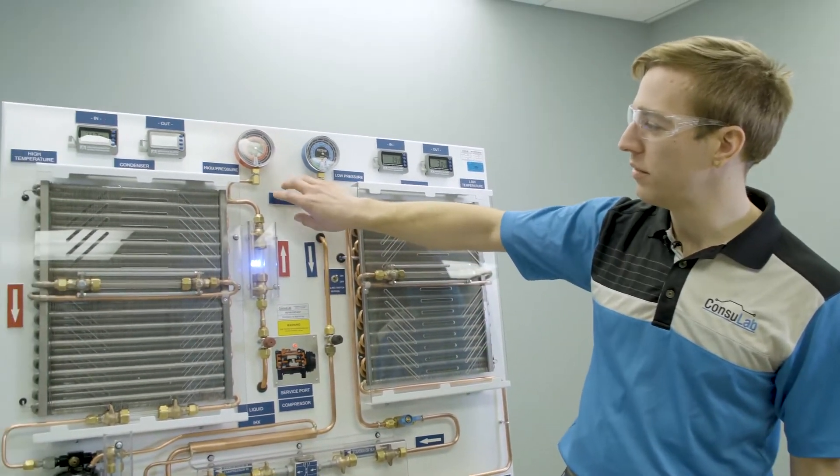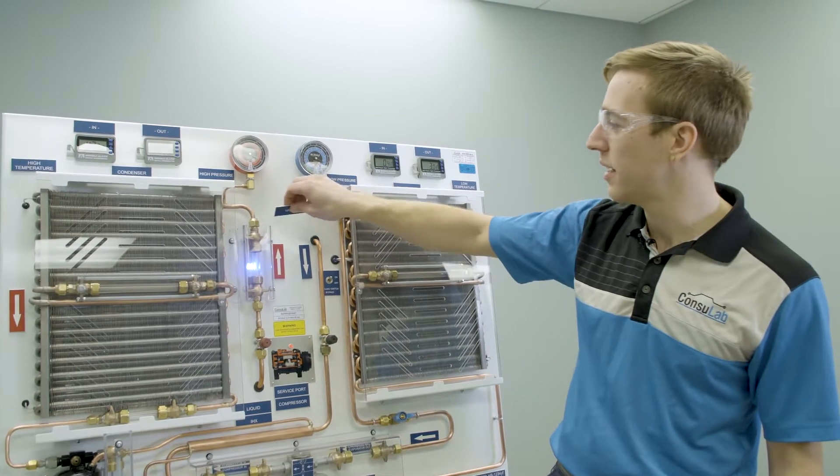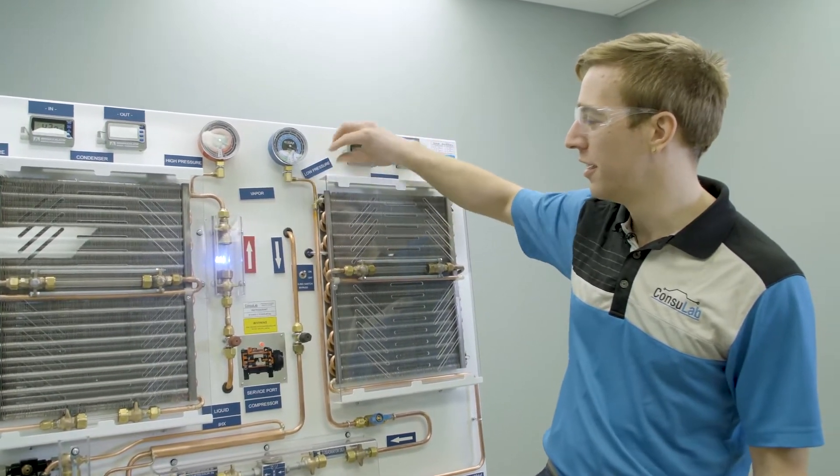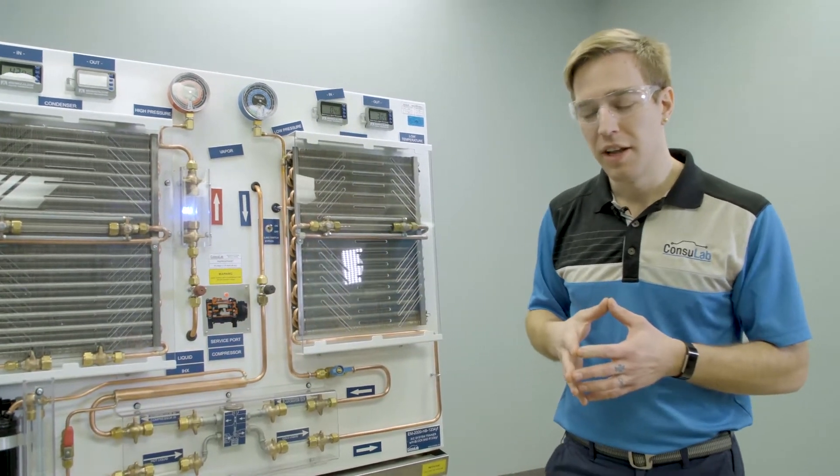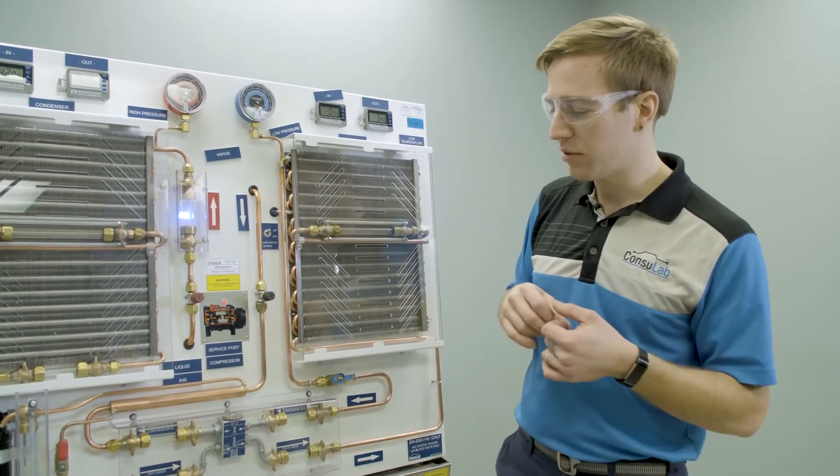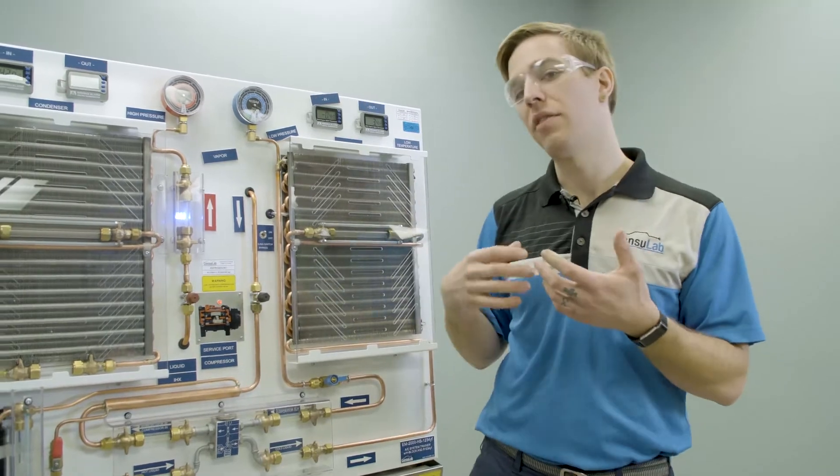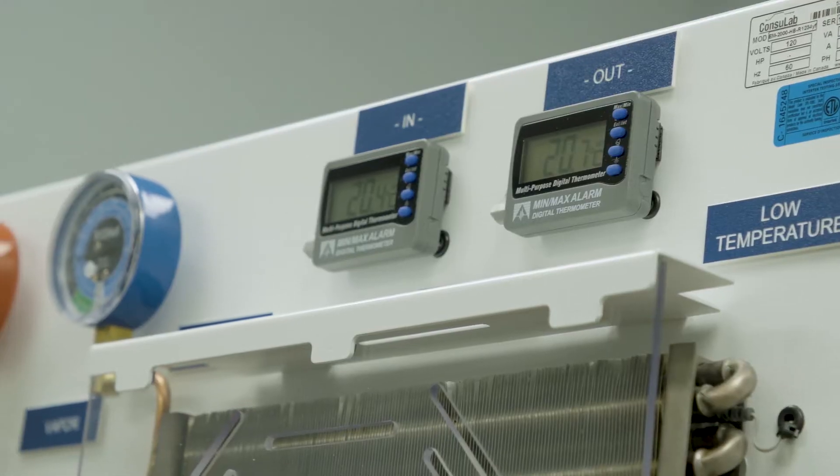One of the things you'll notice is that all of these labels, these are magnetic labels, so if you see some of them that are crooked, that's why. So one of the exercises that we do with the students is you can remove all the labels and you can have them go through and identify all the various components.